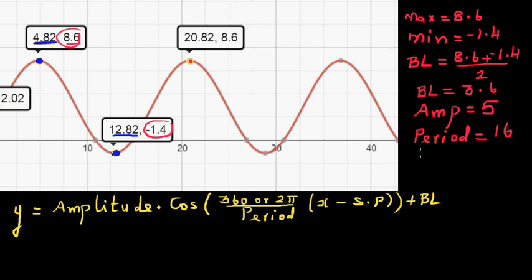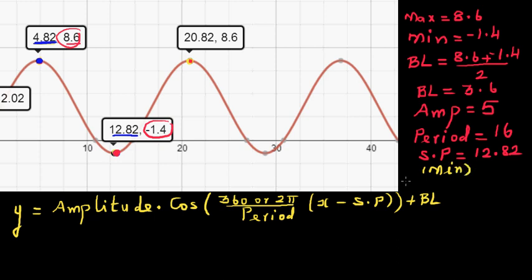Let's decide the starting point. In the previous video I started at the maximum, so in this video I'm going to start at the minimum. The starting point is 12.82. The final decision: your starting point is the minimum. When you start from the minimum, the type of graph is going to be negative cosine.